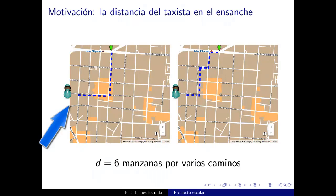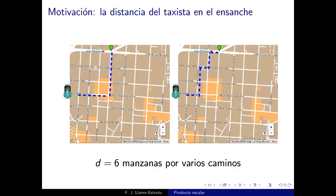Imaginemos que queremos ir desde Hilarión Eslava con Fernández de los Ríos hasta Guzmán el Bueno con Cea Bermúdez. La unidad natural es la manzana: caminamos tres manzanas a la derecha y tres manzanas hacia arriba. Un taxi que siga la cuadrícula recorre seis manzanas en total.